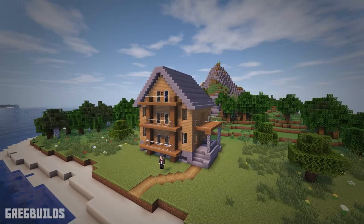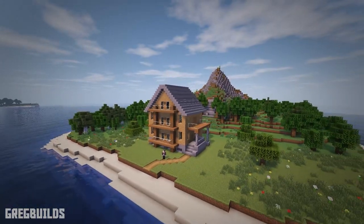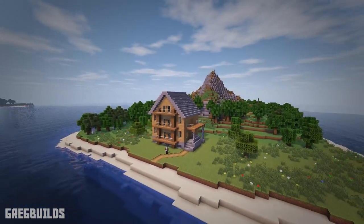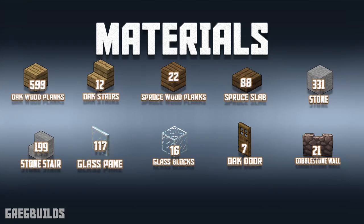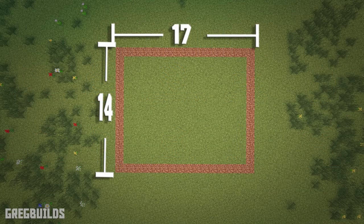This build is broken down into 8 steps and without further ado let's start the build. Here's a complete list of the materials we need to build this house. This entire build project will require a 17 block by 14 block area spacing, and I marked my area with coarse dirt blocks so we'll know how big the layout is before we start the build.